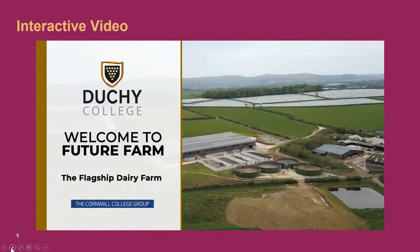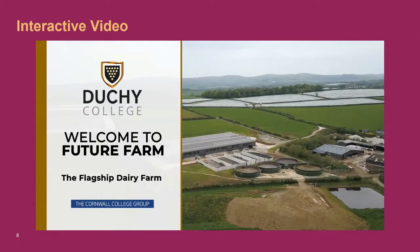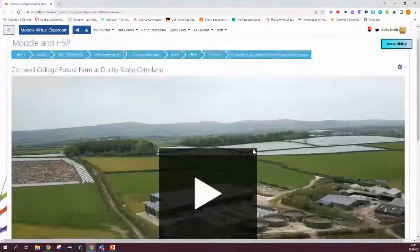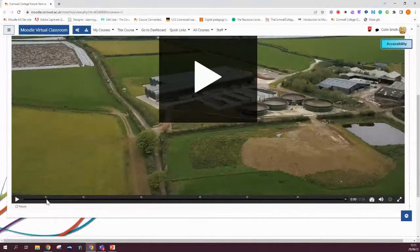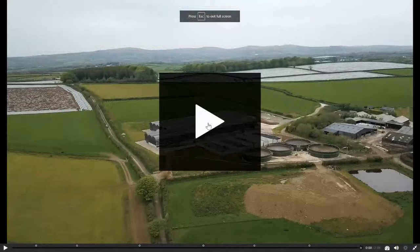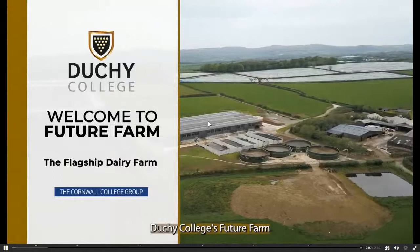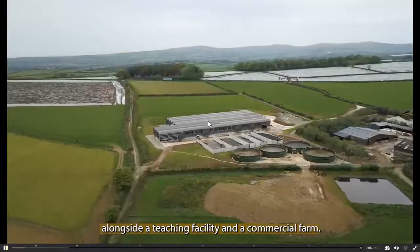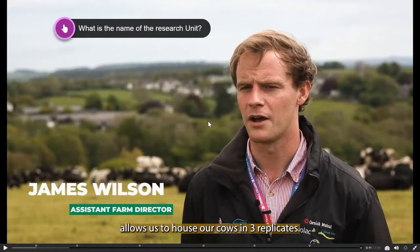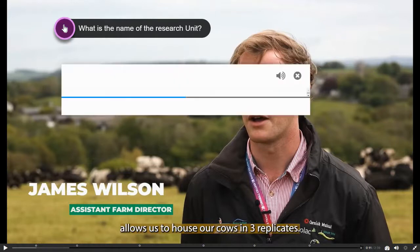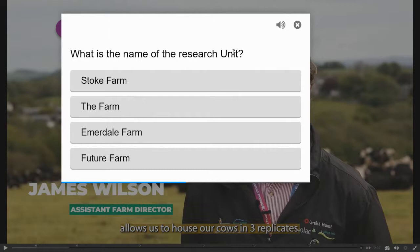The next one is called interactive video. We've done a lot about dairy and farming - we have Stoke Climsland, something called the Future Farm, which is one of the first in the country and is very automated. This video will show you a little bit about it and how we use it to capture information from students. You'll notice there are little white dots - these signify something that's going to happen within the video. So I'll let it play and then it'll stop and ask a question to make sure students are checking their learning. Does anybody want to hazard a guess at the answer?